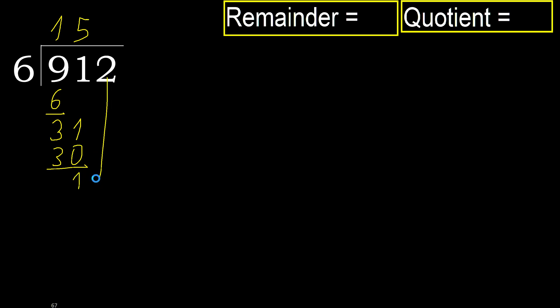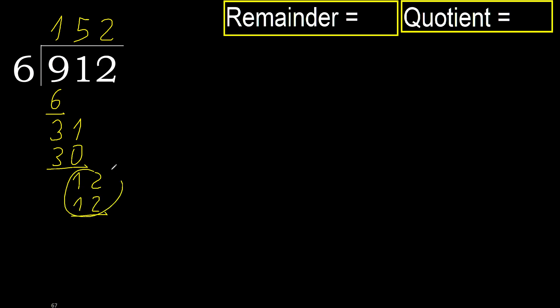Next, bring down: 12. 6 multiplied by 2 is 12 — not greater. Subtract: 12 minus 12 equals 0.